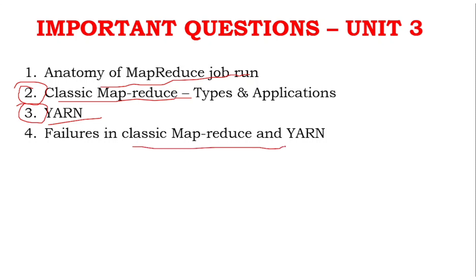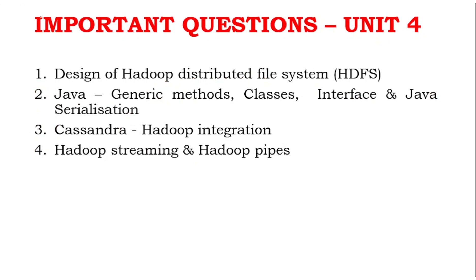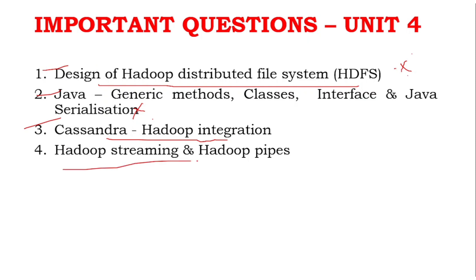For Unit 4, the design of the Hadoop Distributed File System is a very very important question. Cassandra and Hadoop integration is also very important - confirmed for Unit 4. The split-ups given are: Hadoop streaming 7 marks, Hadoop pipes 6 marks. These are the key question areas for Unit 4.